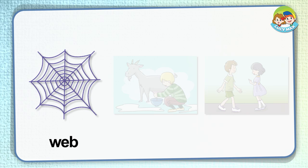Web. This is a web. A spider makes it. A spider catches other insects using the web. We can see webs in many places — we can see them in trees and in corners.